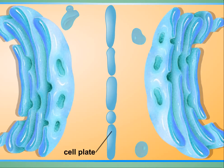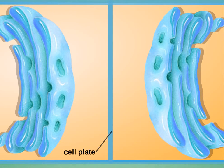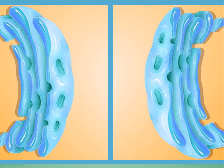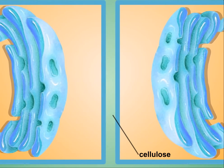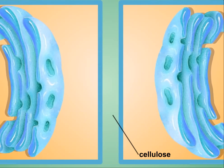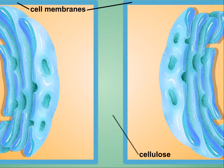The cell plate continues to grow outward until it reaches the cell membrane along the perimeter of the cell. Cellulose, contained in the vesicles, is then laid down between the new membranes, creating two new cell walls.